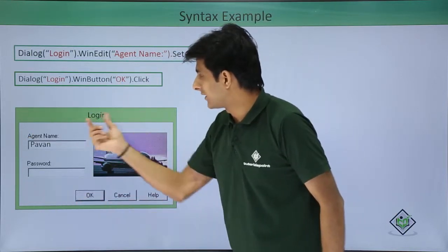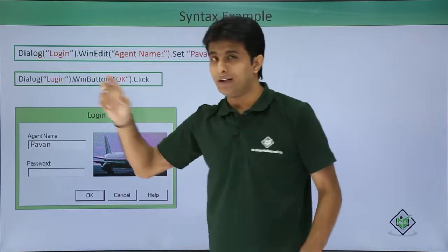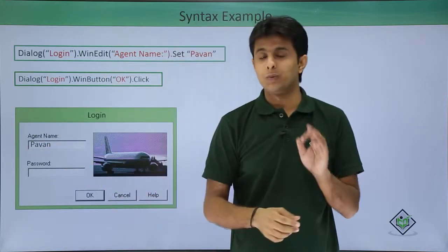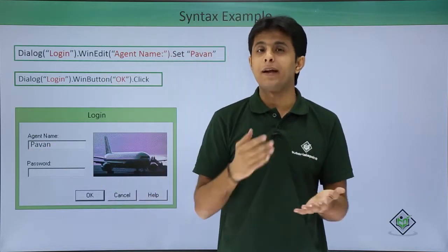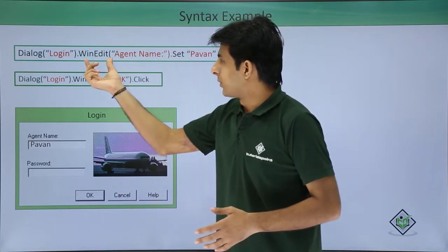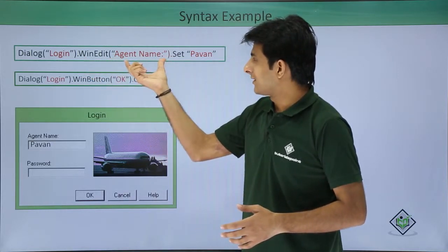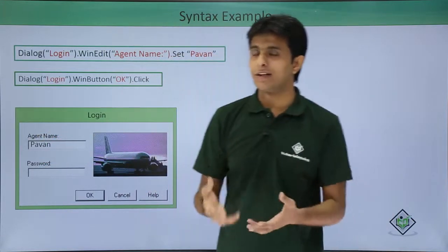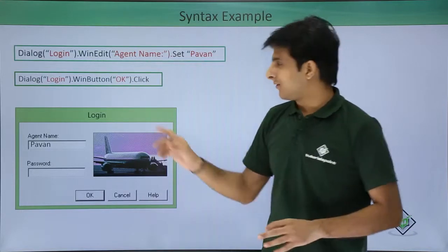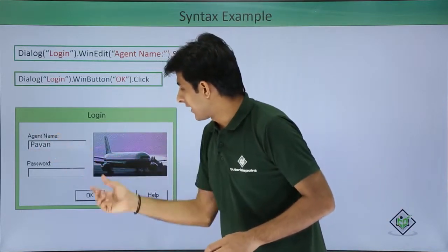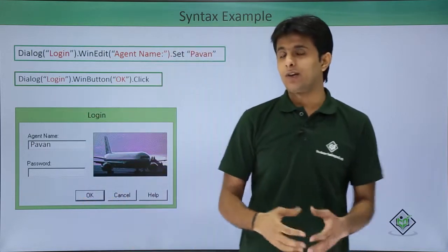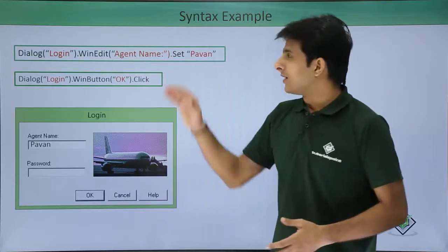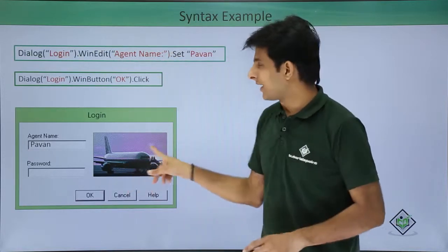If you do a recording on that QTP application, the syntax would be like this: it's a dialog box, the name is 'login', so dialog login in double quotes. Then dot win edit — win edit means Windows edit; for a web-based application it would be web edit. In brackets, given as agent name. Dot set is the operation and you insert a value. If instead of win edit you have a button, it becomes dialog login dot win button dot click.